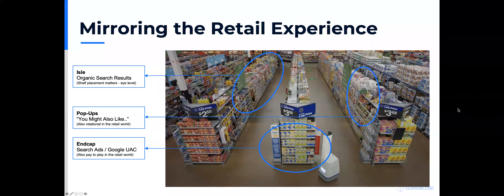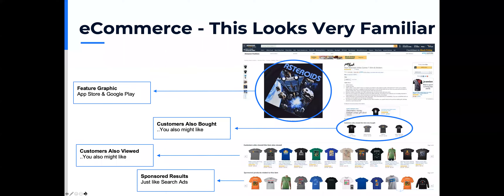There are aisles, and depending on where you are in the aisle — whether you're at eye height or very high or very low — you'll get more or less traction. There are pop-ups, which highlight a product or app. And there are end caps, which in the mobile world are like Apple Search Ads, where you're buying a placement to be featured. This looks very familiar when you compare the app store and Play Store to Amazon.